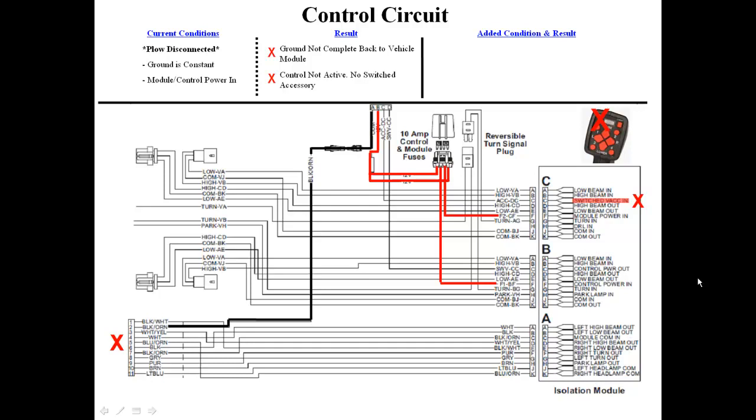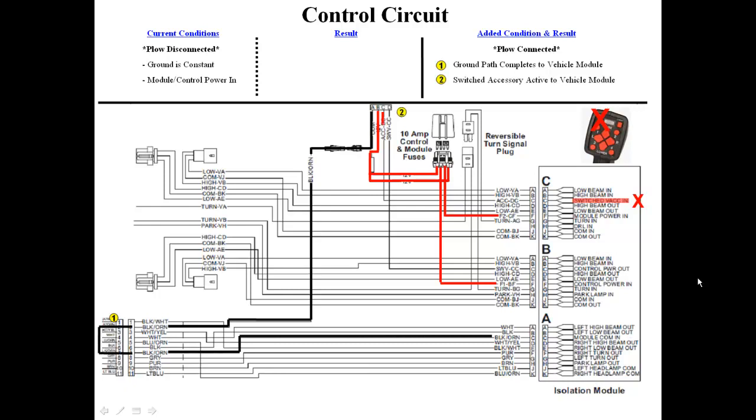The plow is now connected and the 11-pin headlamp harness is plugged in, which completes the ground to the isolation module on the black-orange wire. The switched accessory circuit is activated by turning on the keyed ignition. The isolation module transfers 12 volts from the F1 fuse to the cab control, illuminating the backlight. The control is now ready to operate.